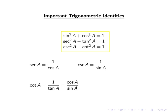Here, sec a is 1 over cos a, cosec a is 1 over sin a, and cot a is 1 over tan a, or simply cos a over sin a, since tan a equals sin a over cos a.